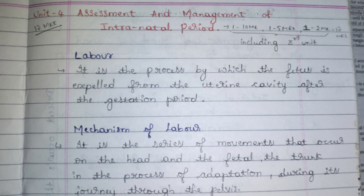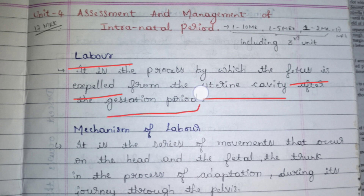The first topic is labor. What is labor? Labor is nothing but delivery — that is, the birth of the baby. The definition is: it is the process by which the fetus is expelled from the uterine cavity after the gestation period. The gestation period is 9 months, the time the baby stays in the womb. So labor is the process in which the baby comes out from the uterus after completing the gestation period.